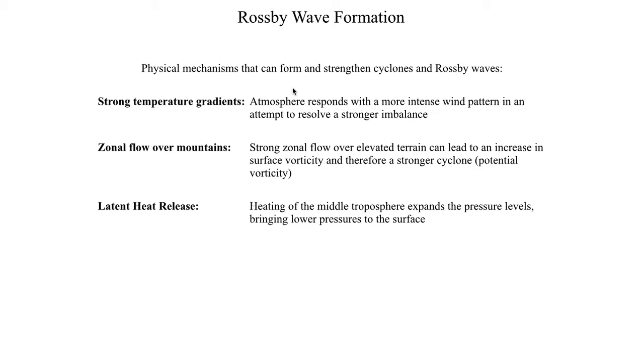And it turns out if you have a bunch of latent heat release in the middle of the troposphere, so let's say you've got a lot of thunderstorms that are going up, a lot of condensation, so you're getting a lot of latent heat release in the middle part of the atmosphere, you're going to expand that column. And the process of expanding those isobars will bring lower isobars down to the surface, which can lead to some fairly rapid pressure drops at ground level.